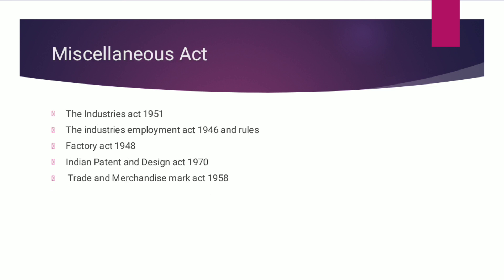There were also some other enactments directly or indirectly related to manufacturing, distribution and sale of drugs and pharmaceuticals in India. They are: the Prevention of Food Adulteration Act 1954 and rules; the Industries Development and Regulation Act 1951; the Industrial Employment (Standing Orders) Act 1946 and rules; the Industrial Disputes Act 1947; the Factories Act 1948; the Indian Patents and Designs Act 1970; the Trade and Merchandise Marks Act 1958; the Epidemic Diseases Act 1897; and the Shops and Establishments Act of respective states. We will be studying all these different acts in this subject in our coming lectures.